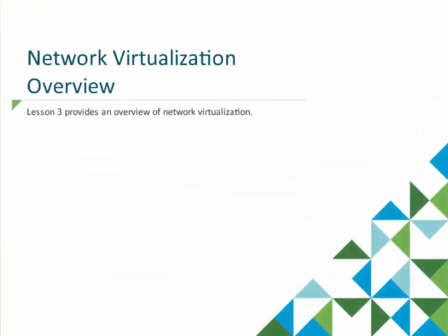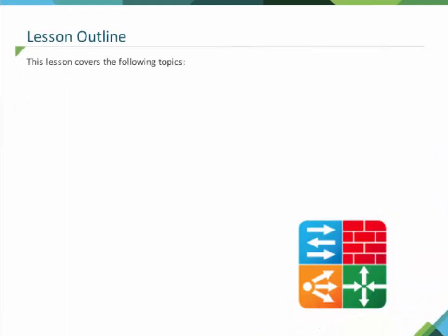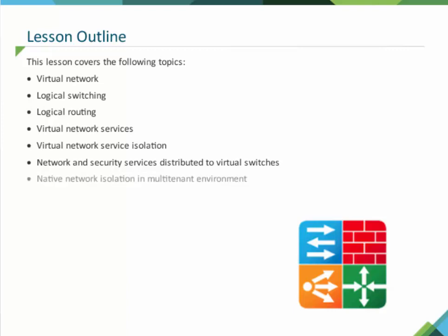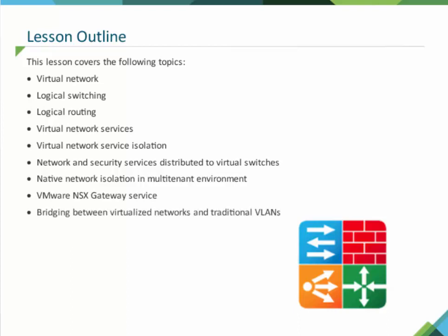Lesson 3 provides an overview of network virtualization. This lesson covers the following topics: virtual network, logical switching, logical routing, virtual network services, virtual network service isolation, network and security services distributed to virtual switches, native network isolation in multi-tenant environments, VMware NSX gateway service, and bridging between virtualized networks and traditional VLANs.